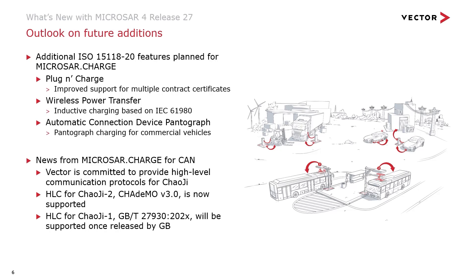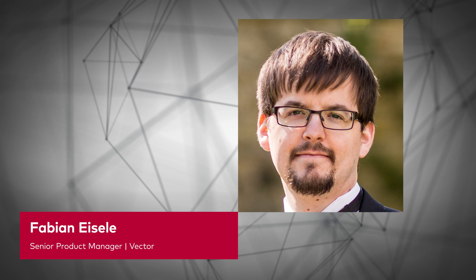As this presentation was mainly about Microsar Charge for CCS, I also want to mention some news about Microsar Charge for CAN. We currently already support CHAdeMO and GB/T 27930, and are committed to fully support the next generation, Chaoji. With CHAdeMO version 3, we are already able to provide the high-level communication protocol for Chaoji-2. A new version of GB/T 27930 for Chaoji-1 hasn't been released yet, but a release is expected next year. Once the standard is available, we will also support it with Microsar Charge. This video gave an overview of the new features for Microsar Charge with Microsar 4 release 27 and an outlook on what to expect in future releases.